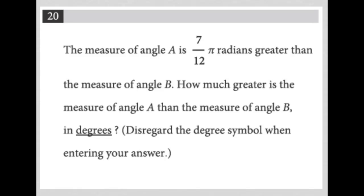This question looks like a translate word problem question. The question says the measure of angle A is 7/12π radians greater than the measure of angle B.